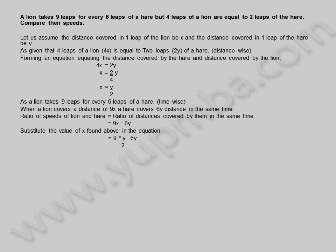Substituting: 9 into y by 2, is to 6y. This equals 9y by 2, is to 6y, which equals 9 by 2 is to 6y, giving us 9 to 12y, simplified to 3 to 4. The ratio of speeds of a lion and hare is 3 to 4.